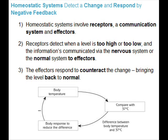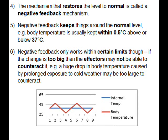Homeostatic systems detect a change and respond by negative feedback. They involve receptors, a communication system, and effectors. Receptors detect when a level is too high or too low, and the information is communicated via the nervous system or the hormonal system to effectors. The effectors respond to counteract the change, bringing the level back to normal. The mechanism that restores the level to normal is called a negative feedback mechanism.